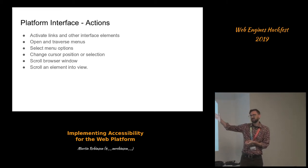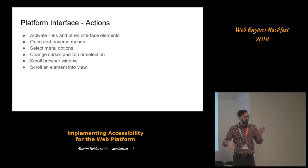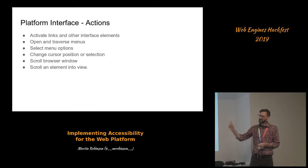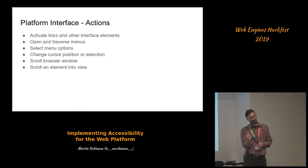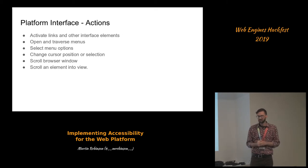Some of the things that can happen here are activating links or other interface elements, going through menus, selecting things, activating or de-selecting menu options, changing the position of the text cursor, and selecting and unselecting things — things that would be difficult to do if you didn't have access to a mouse.